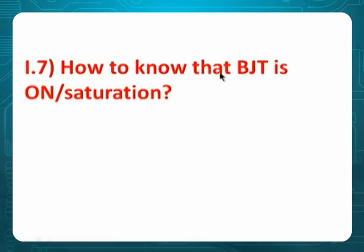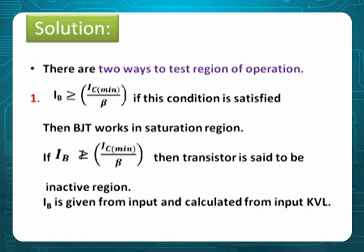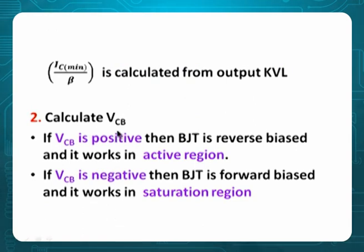Problem 7: How to know that BJT is on or in saturation? There are two ways to test the region of operation. One: IB greater than IC(min)/beta — if this condition is satisfied, BJT is in saturation; if not, it is in active region. Second way: calculate VCB. If VCB is positive, output is reverse biased — active region. If VCB is negative, output junction is forward biased — saturation.